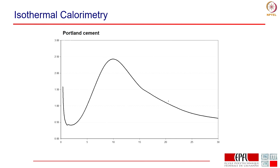Here we see the curve which is typical for Portland cements. We see at the beginning a very high rate of heat evolution, which then falls away quickly and remains at a low level for several hours. That is very important from a practical point of view because this gives you the time to mix your concrete, move it to the site, and put it in the forms. Then after two or three hours the rate of heat evolution starts to increase again to a maximum at about ten hours, and then it decreases.